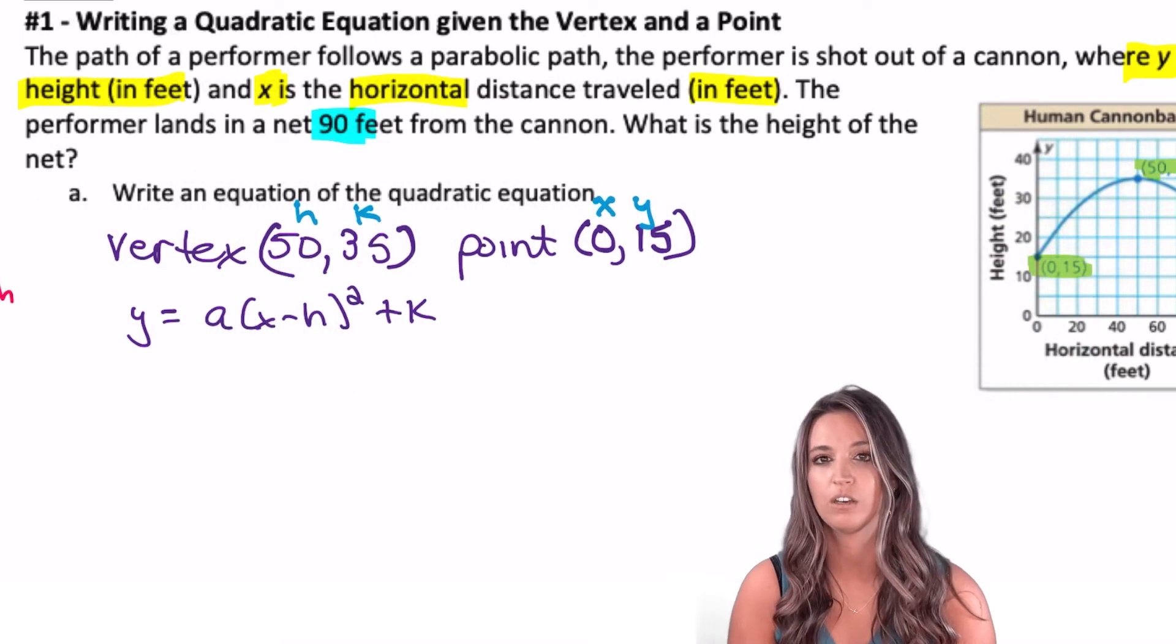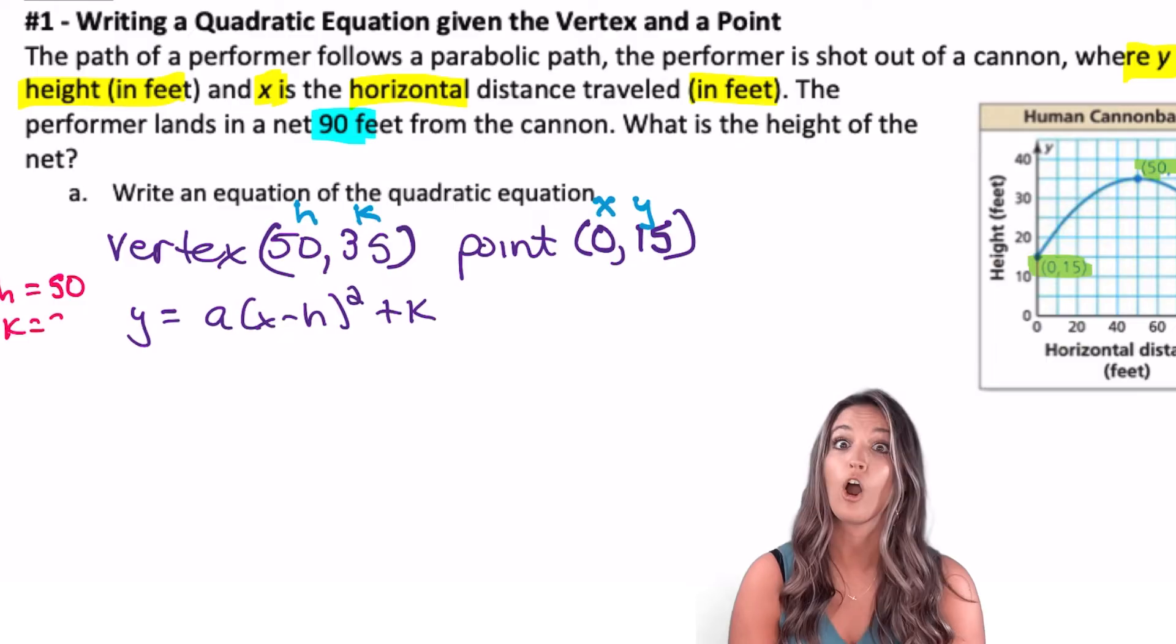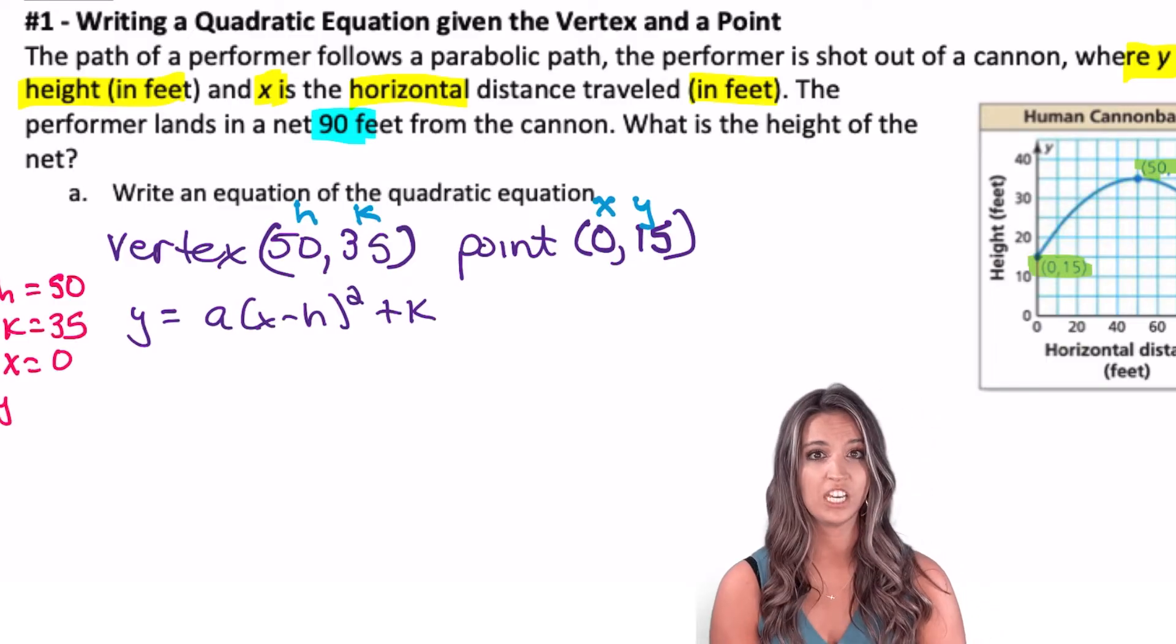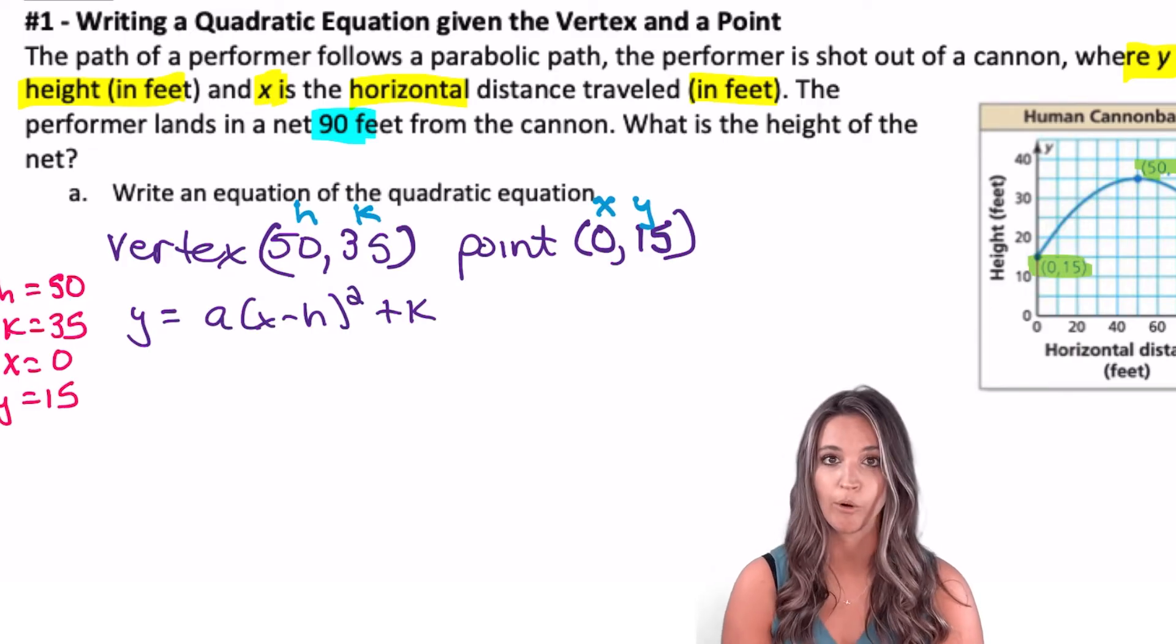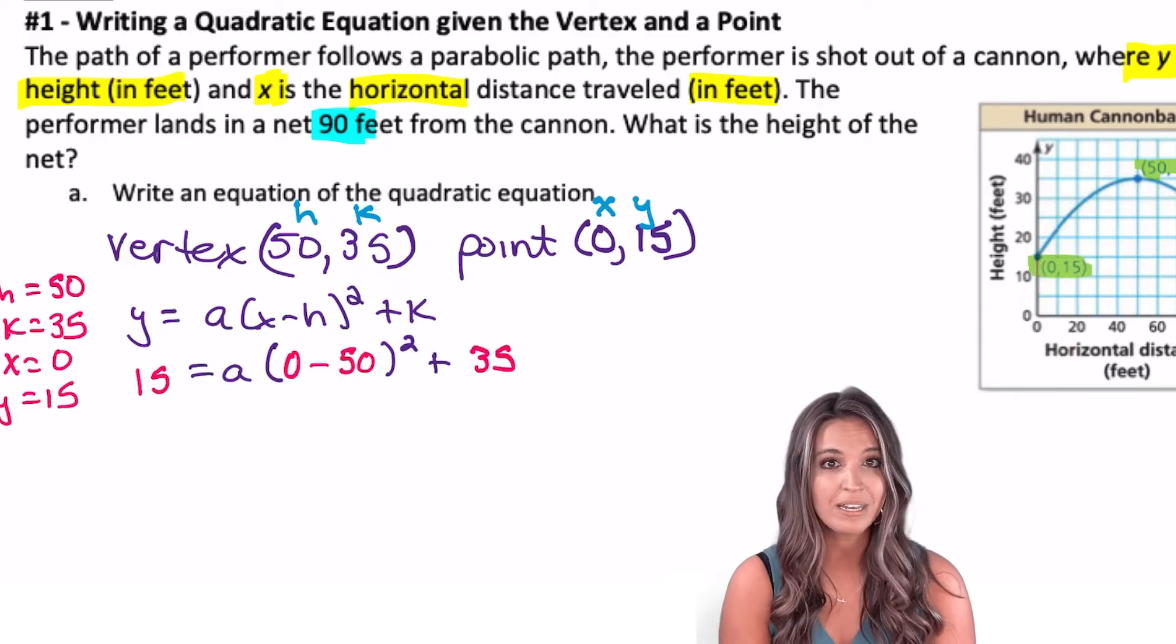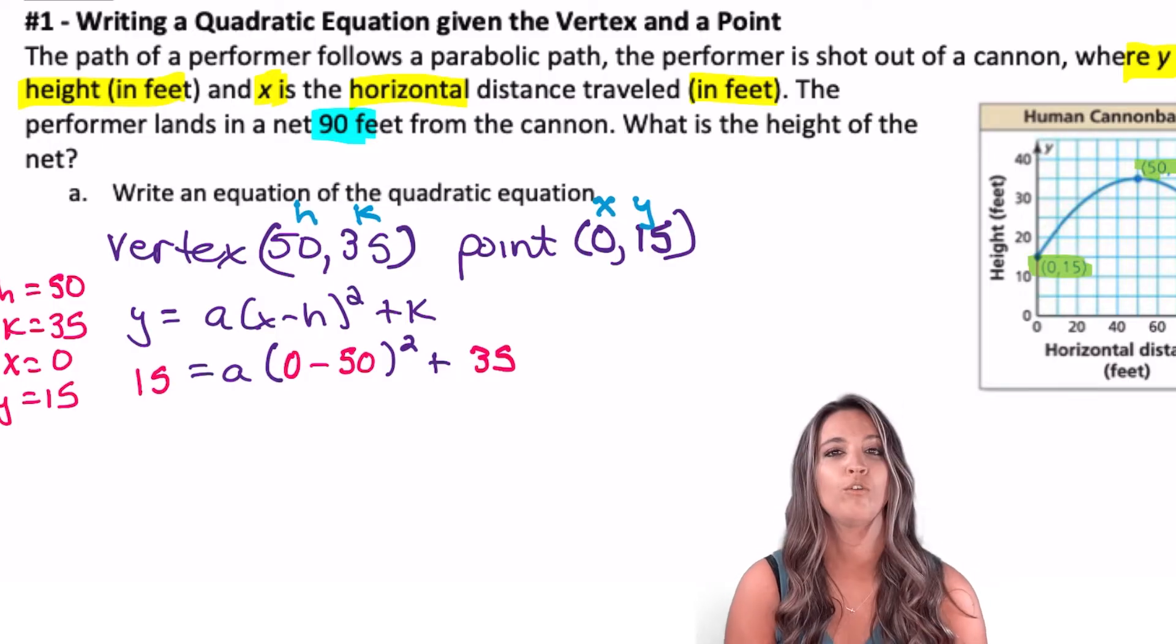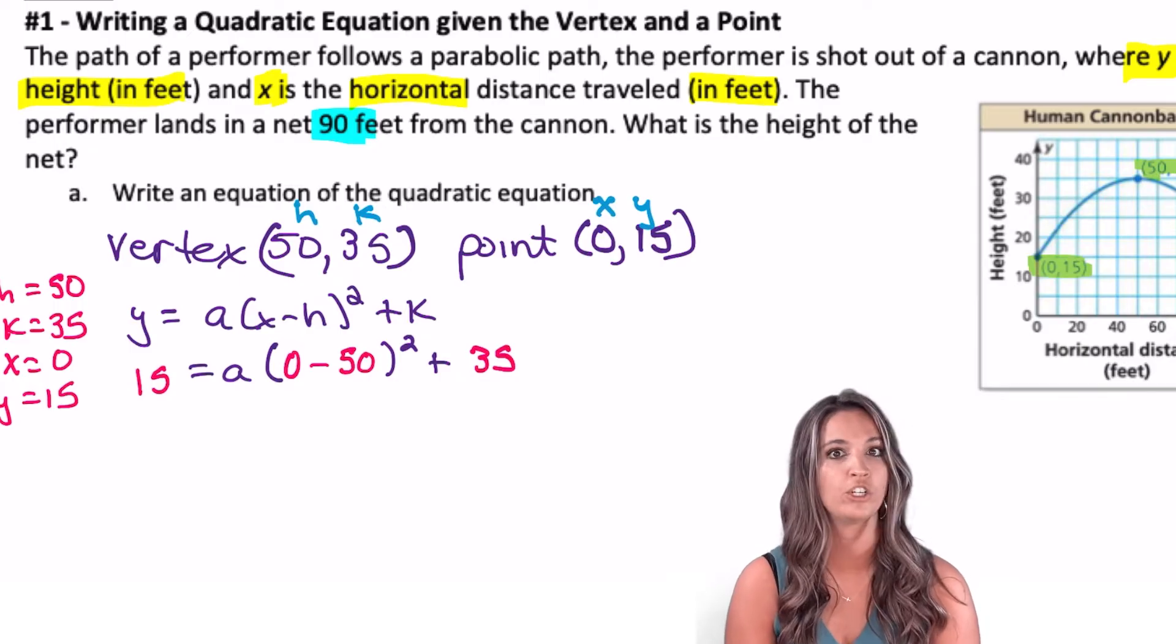We know h is 50. We know k is 35. And we know x for our additional point is 0 and y for our additional point is 15. Let's plug in all the pieces we know to our general form. What am I missing? A. So I could solve this general form for a and then write my quadratic equation in vertex form.